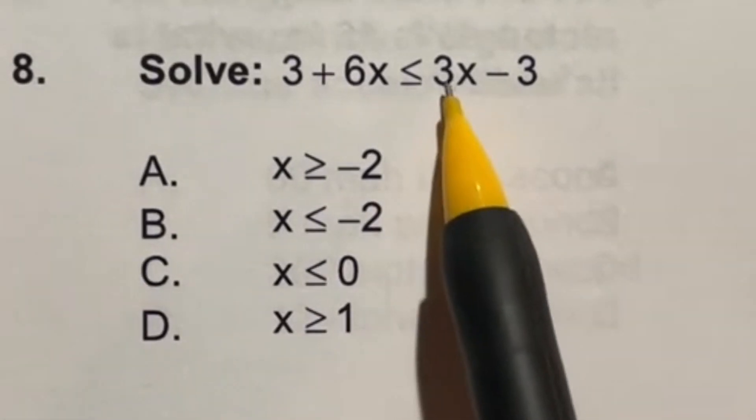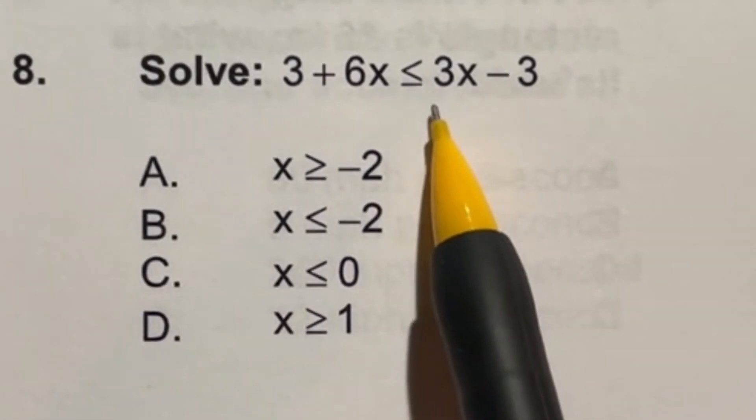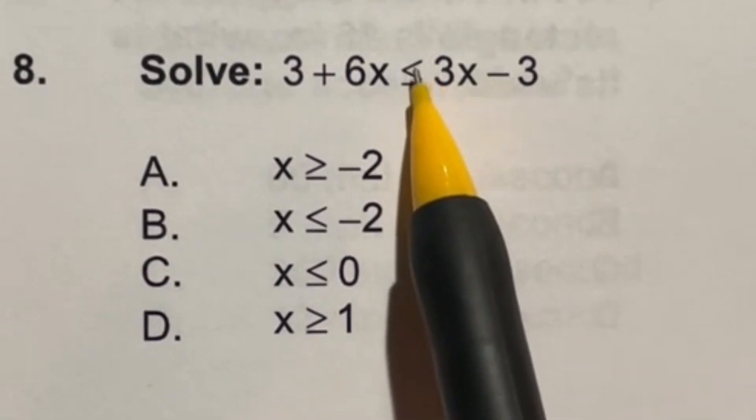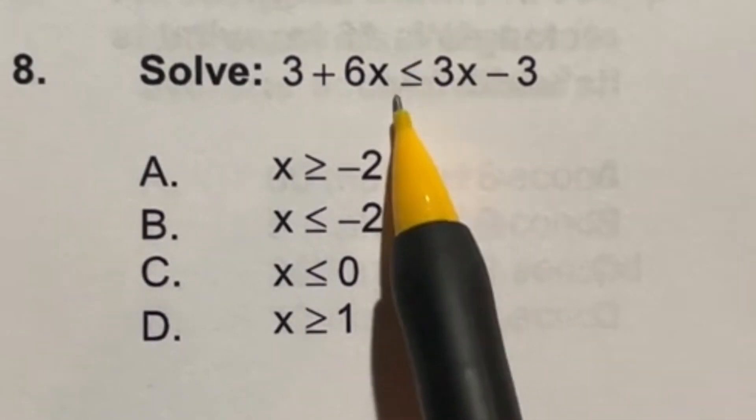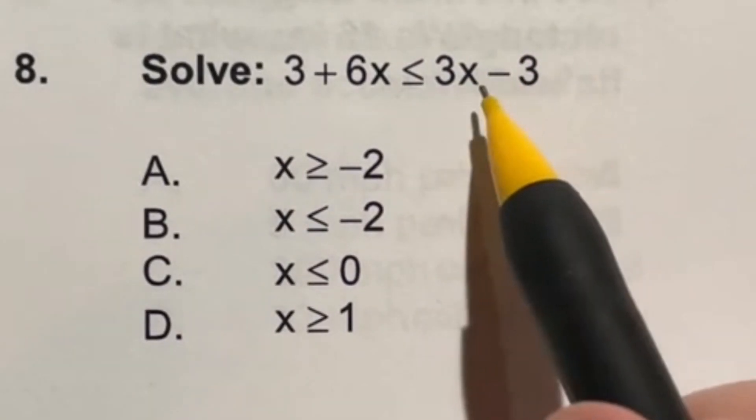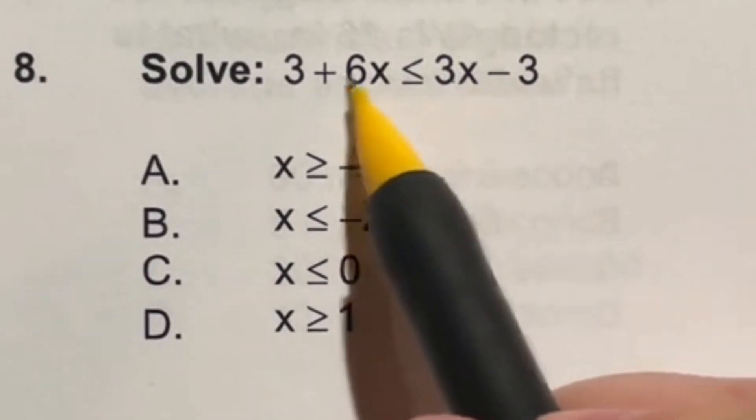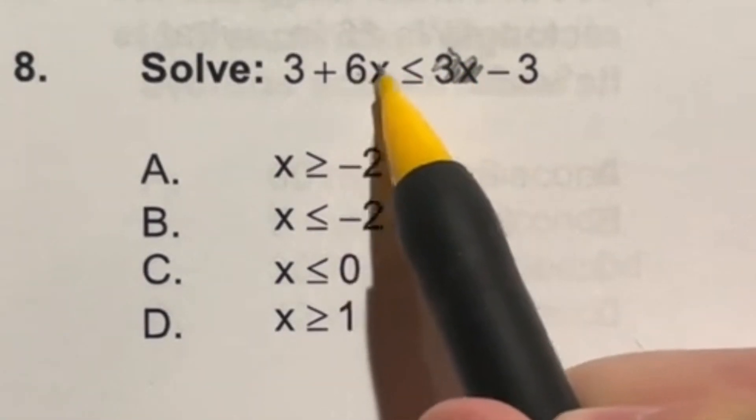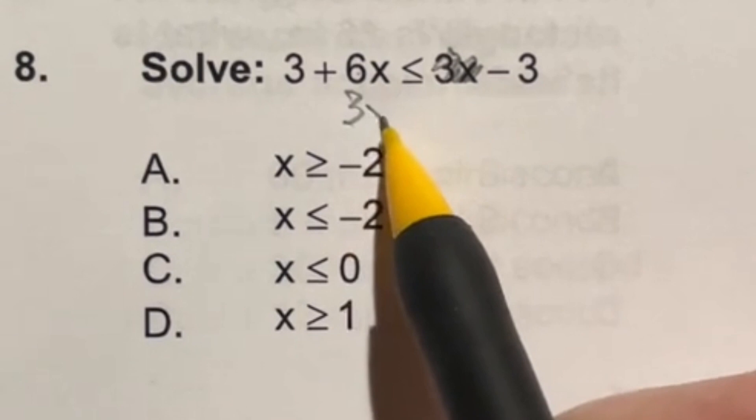You can treat solving an inequality the same way as an equality. It's just anytime you multiply or divide by a negative, you have to switch how this sign looks. But let's see if we even have to do that at all. First step is going to be combining like terms. We're going to subtract the 3x from both sides. That's going to cancel it out over here. And 6x minus 3x is going to leave me with 3x over here.